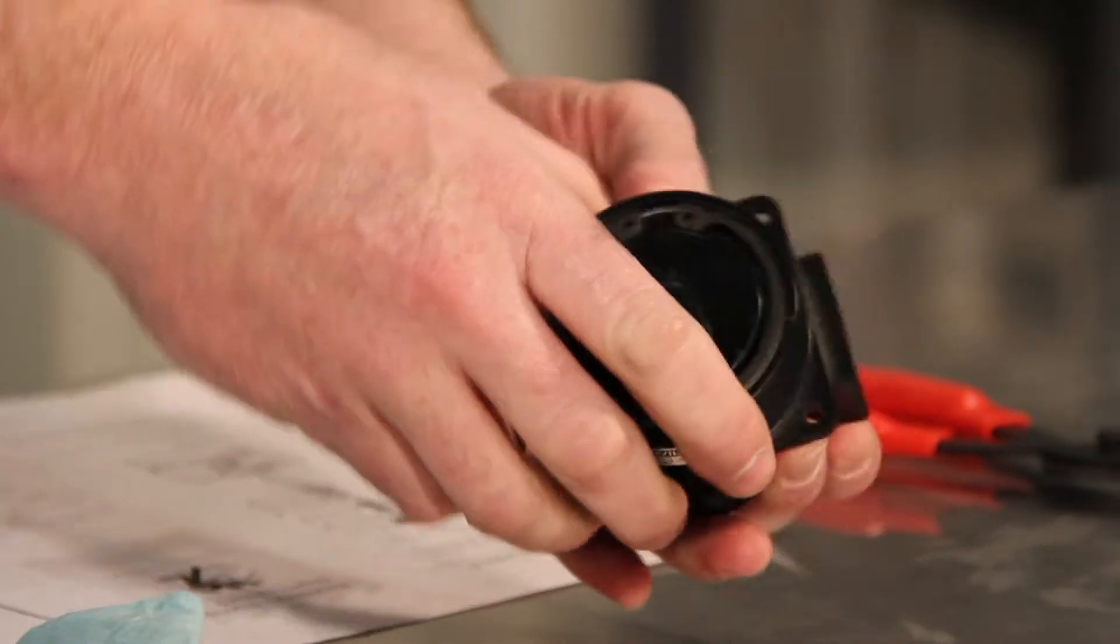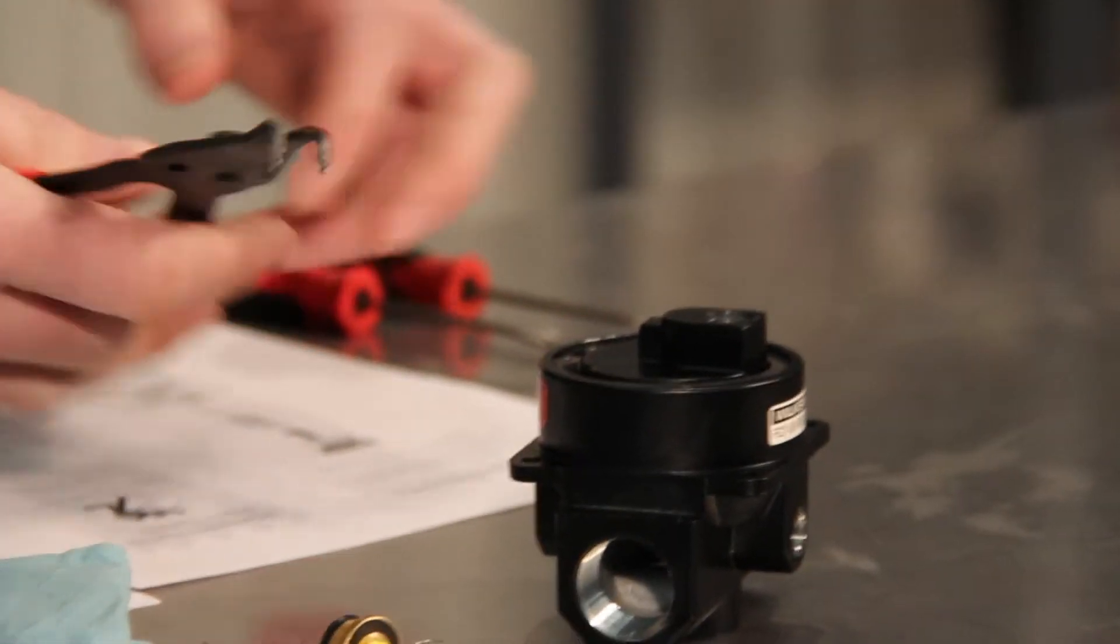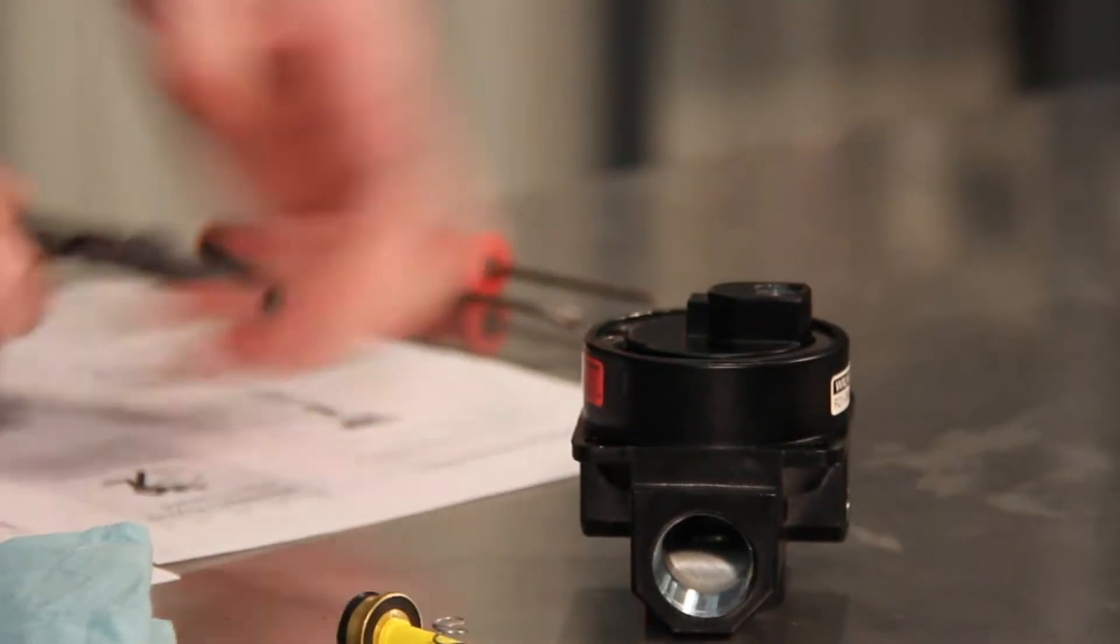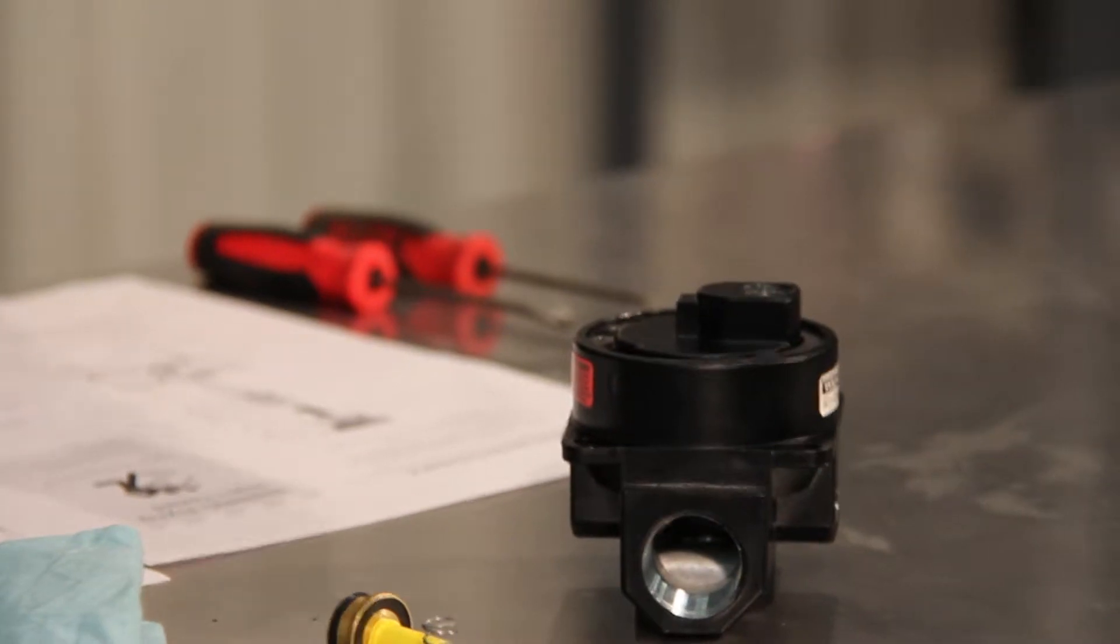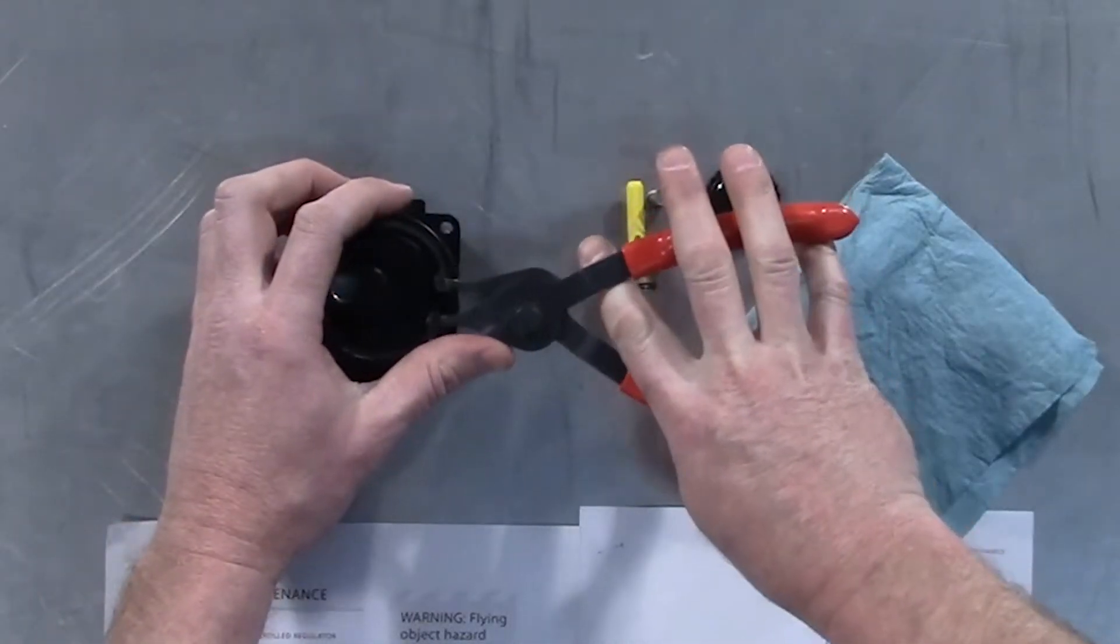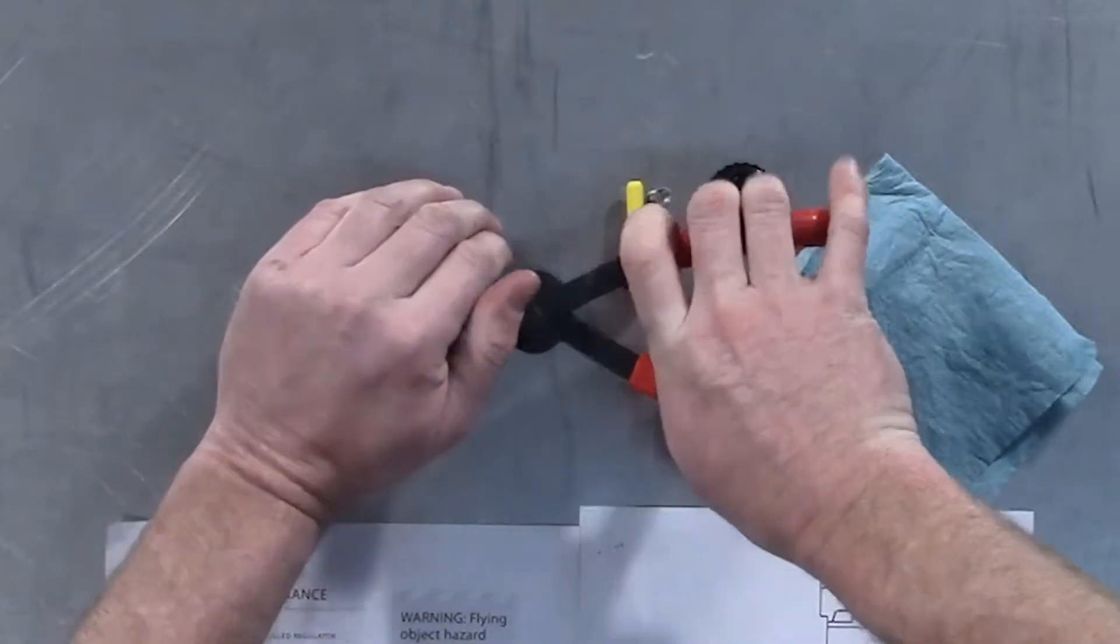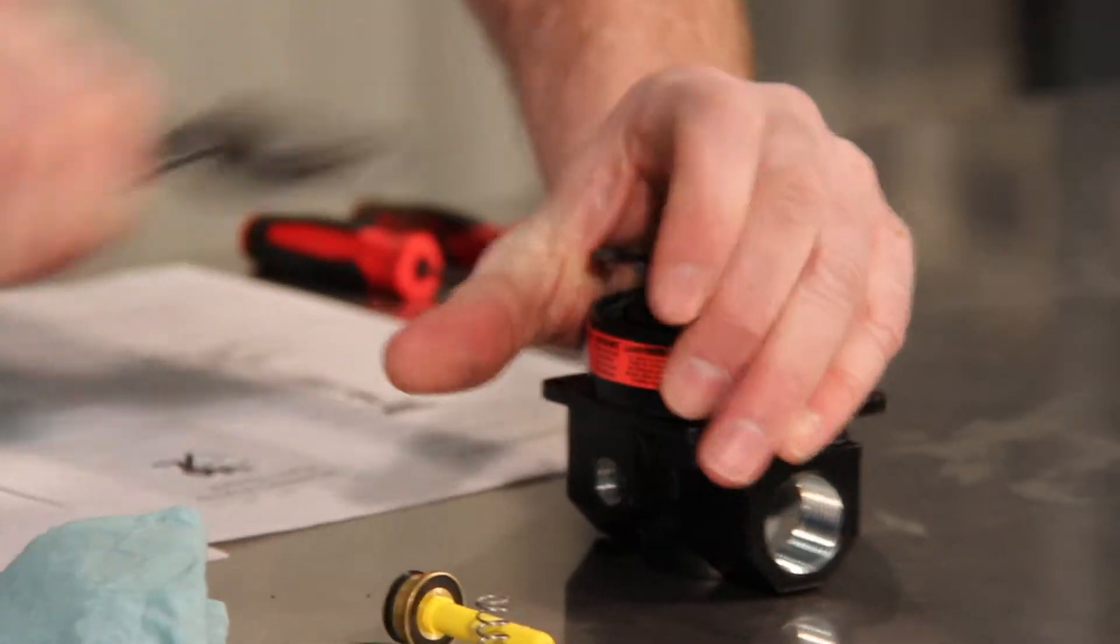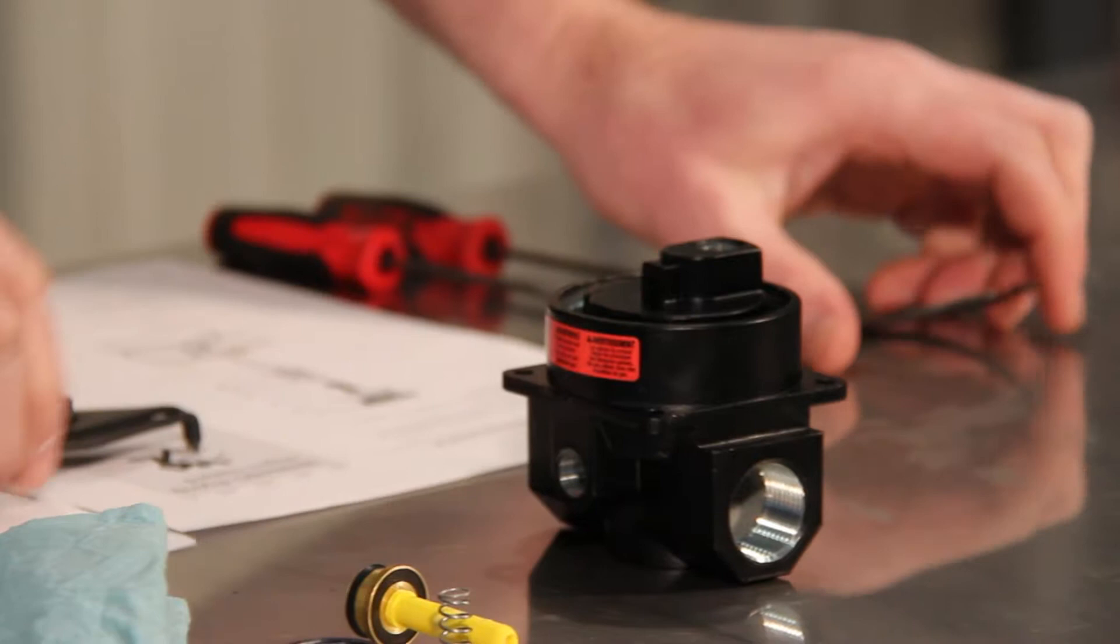Next, we'll move to the bottom of the regulator. We want to use a snap ring pliers to remove the snap ring. We want to be using our safety glasses as PPE. Put the snap ring pliers on the snap ring, simply remove the snap ring and set it aside.